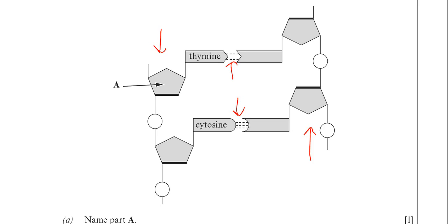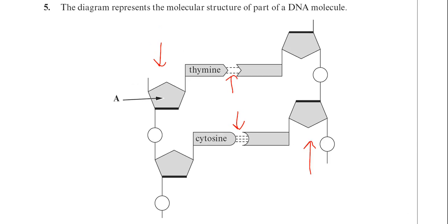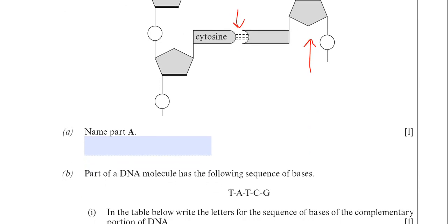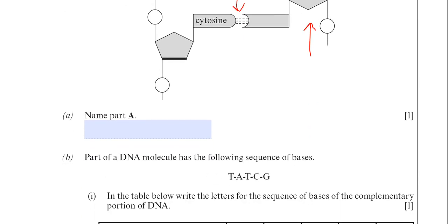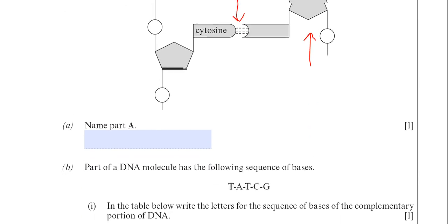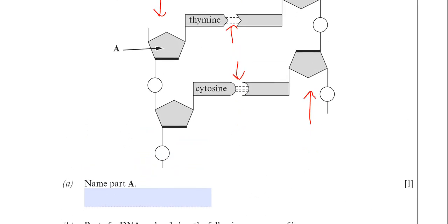So that's just a little bit about the diagram that the examiner has drawn there for you. Part A then is asking you to name Part A so in the diagram that is pointing to the sugar component of DNA but to put sugar as an answer would be very incorrect here. DNA has got a particular type of sugar of course and that sugar is deoxyribose sugar.